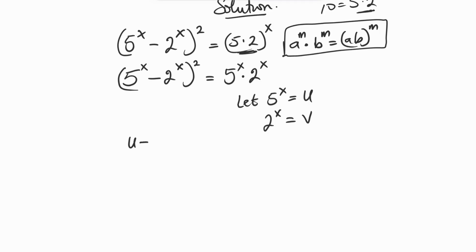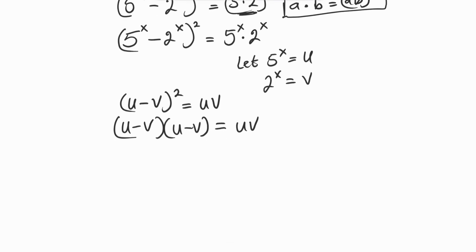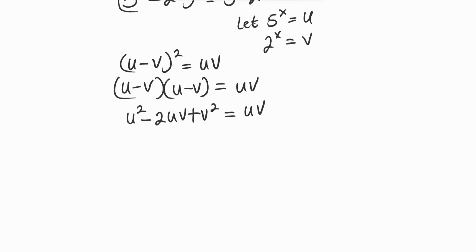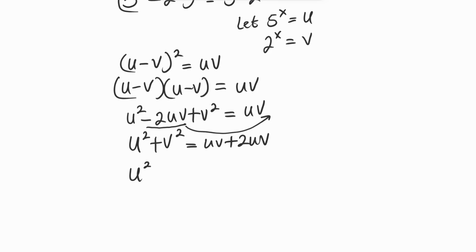So we have (u − v)² = uv. Opening the parenthesis: (u − v)(u − v) = uv. Multiplying out gives u² − 2uv + v² = uv. Collecting like terms, we get u² + v² = 3uv.